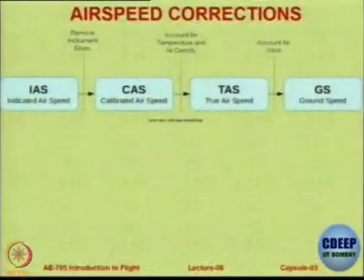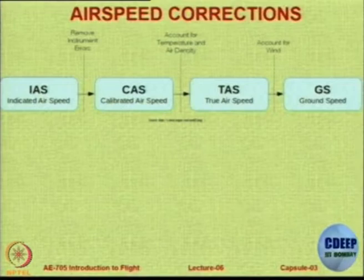For that we have to understand the working. The dynamic pressure in an incompressible flow can be shown as half rho v squared. So p_total equals half rho v squared plus p_static; if you subtract p_static you get half rho v squared. Half is constant, but rho is the density of the air. And as we know, the density of the air does not remain constant as we go from one altitude to another.